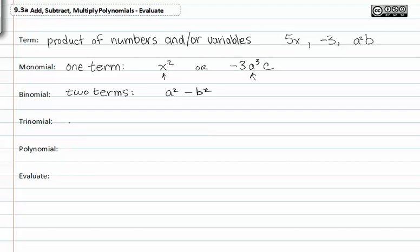With trinomials we have three terms. Something with three terms would be something like ax² + bx + c. That would be an example of a trinomial.